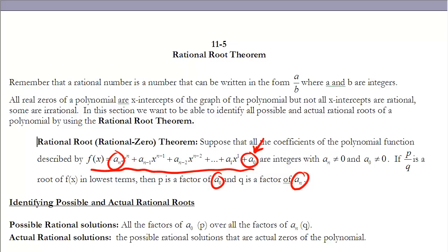So really what we're going to do is we're going to be looking at the factors of the leading coefficient and factors of the constant value of your polynomial. If we're identifying the possible and actual roots of a polynomial, the possible roots will be all the factors of a sub 0, or p, over all of the factors of a sub n, or the leading coefficient, q. The actual rational zeros are the possible rational zeros that are actual zeros of the polynomial function.